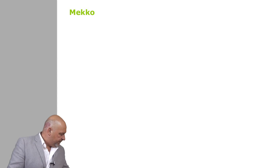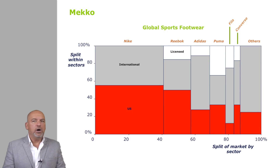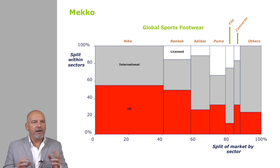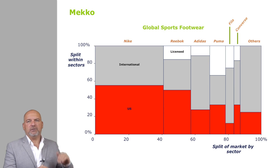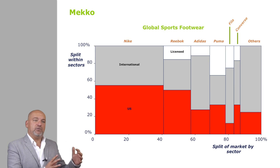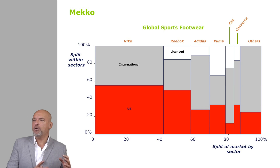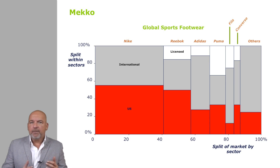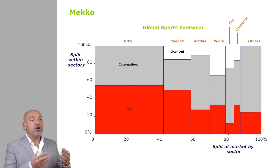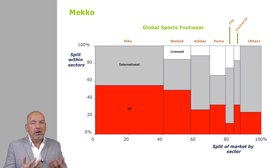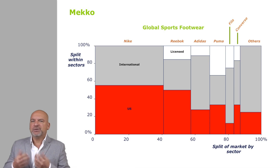Here's another example — a MECO of sports footwear branded shoe manufacturers: Nike, Reebok, Adidas, Fila, Converse. The split is between US, international, and licensed sales. This MECO can serve as either a competitor analysis if you happen to work for Reebok and are looking at international strategy, or as a market analysis if you are a supplier of a specific transportation service for branded shoes.